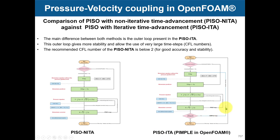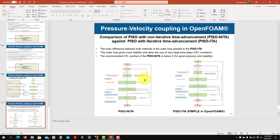To summarize the comparison between PISO non-iterative (NITA) and iterative PIMPLE: the only difference is this outer loop — by repeating it, you recompute everything and get better gradients, better approximations of diffusive and convective fluxes. This is the pressure-velocity coupling in OpenFOAM. My advice is always to use solvers with PIMPLE pressure-velocity coupling and do at least two outer correctors for good accuracy and stability. That's all for this lecture — see you in the next video.